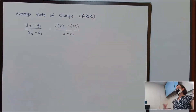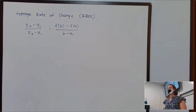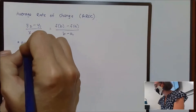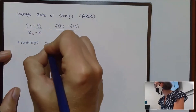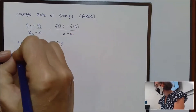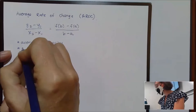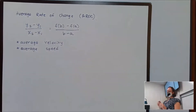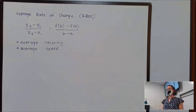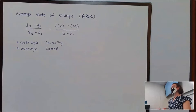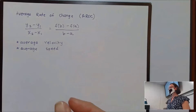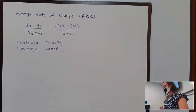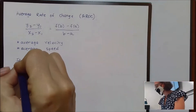Generically it's labeled as average rate of change, but this could also show up as average velocity or average speed. We can move from the average rate of change to what we call the instantaneous rate of change by taking the limit as the distance between two points goes to zero.